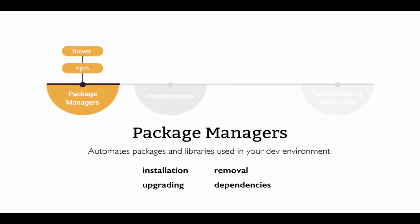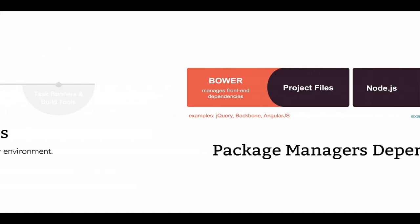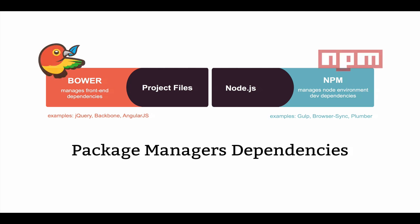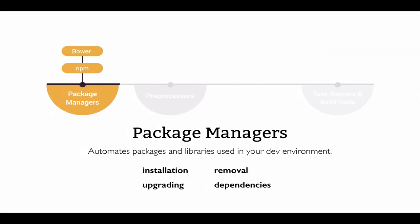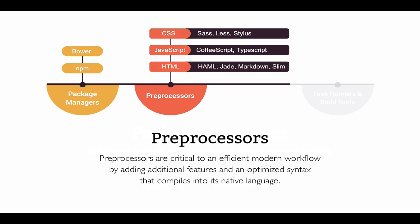First off, we have package managers. Package managers automate the installation, upgrading, and removal of the required dependencies, including packages and libraries that you use in your dev environment. In a lot of build systems you're going to run into two different kinds of package managers: the first one is Bower and the second one is npm, or Node Package Manager. Basically, Bower manages your front-end dependencies such as jQuery, Backbone, and AngularJS, while npm manages your dependencies within the Node.js environment — utility modules you use to actually create your build, such as Gulp, Browser Sync, and Plumber.